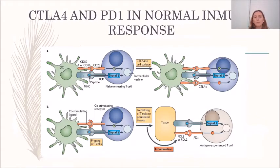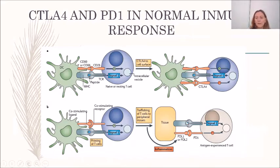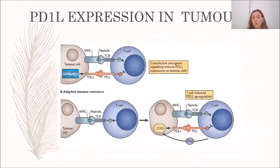In a normal immune response, CTLA-4 acts to terminate an immune response. The other molecule, PD-1, is present in peripheral tissues to protect us from T cell attack. Tumors use the same molecule — a ligand of PD-1 — to block or inhibit T cell activation and evade T cell-mediated destruction.